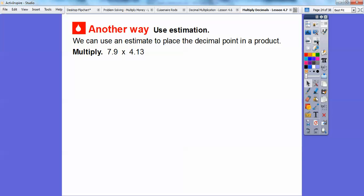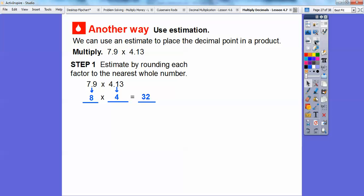Here's a different way. We can use an estimate to place the decimal point in the product. So let's think about multiplying 7.9 times 4.13. Let's estimate this first. Let's round these to the nearest whole number. This rounds to 8, and this rounds to 4. So we'll just put in our head 8 and 4. 8 times 4 equals 32. So this is going to give us an answer somewhere close to 32.